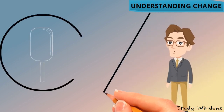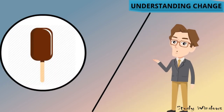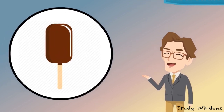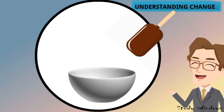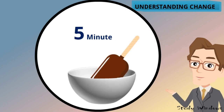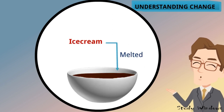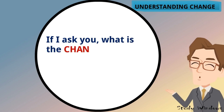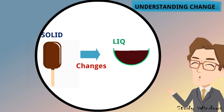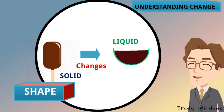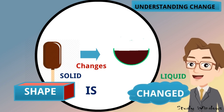Now we will try to understand change further. I know everybody likes ice cream. Consider I give you an ice cream and tell you not to eat it. Take a bowl, keep the ice cream in it, and wait five minutes. You will see the ice cream has melted. The solid ice cream changes into liquid ice cream — so solid changes into liquid, and the shape and state are both changed.